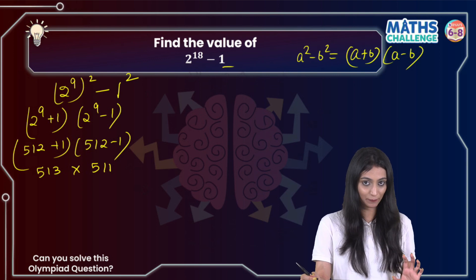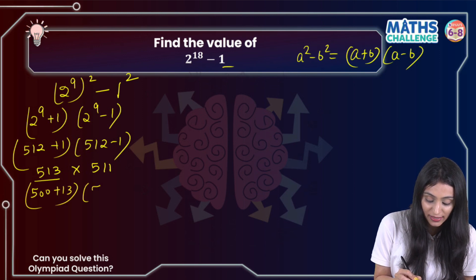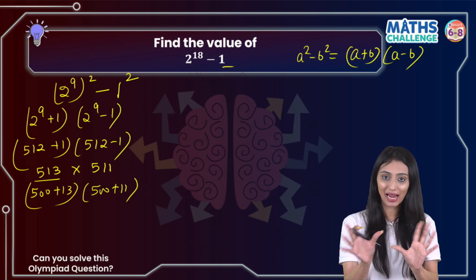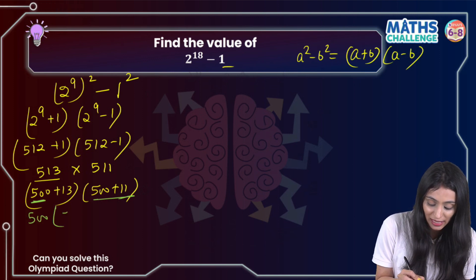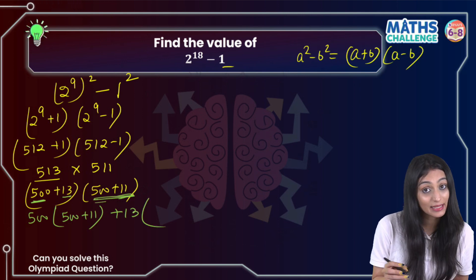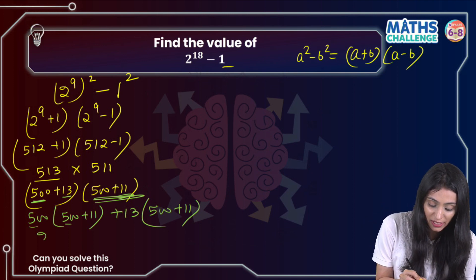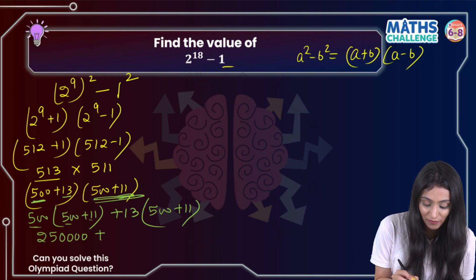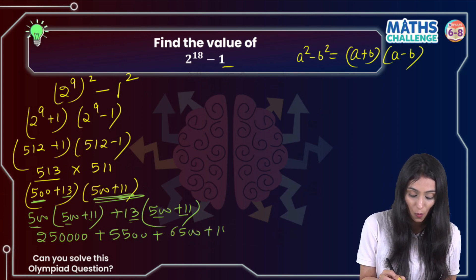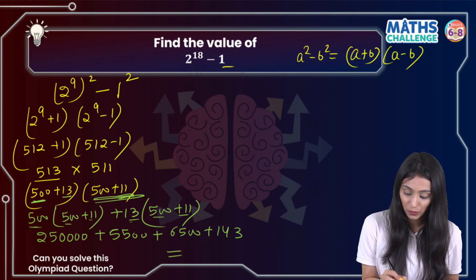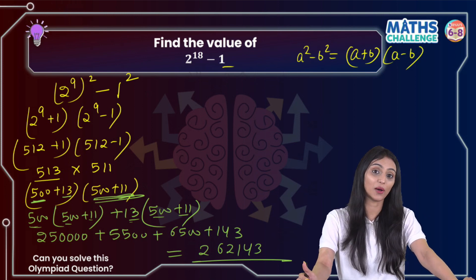Now we are not going to simply multiply them. We will split using the identity: 513 can be written as 500 plus 13, and 511 as 500 plus 11. Then we do bracket multiplication: 500 times (500 plus 11) plus 13 times (500 plus 11). That gives 250,000 plus 5,500 plus 6,500 plus 143. Adding all of them up, the final answer is 262,143.